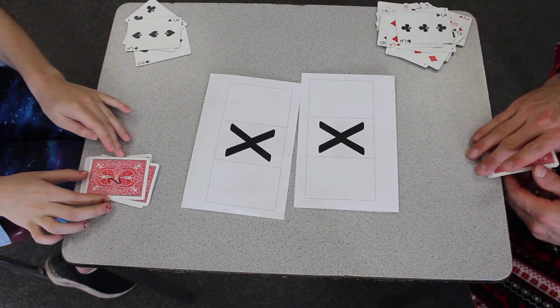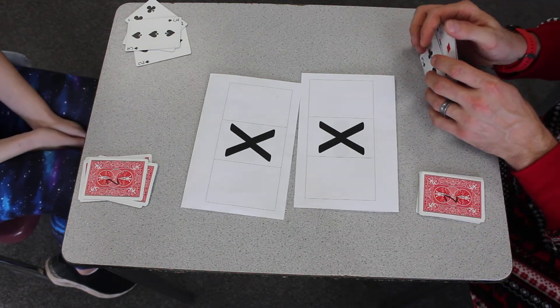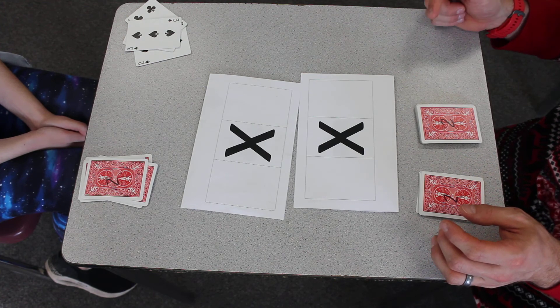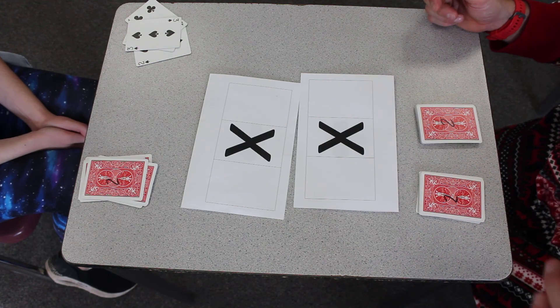When I run out of these cards here that I'm playing with, I take the cards that I had previously won, turn them over, and continue to play with those cards. When one person runs out of cards, that person has lost the game.